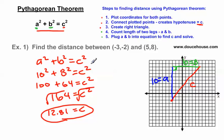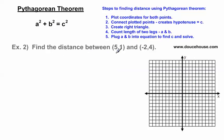If you saw my video on the distance formula, you'll notice some similarities, but this seems easier — there are no negative signs. Moving on to the next example: find the distance between (5, 1) and (-2, 4). I'm going to plot (5, 1) — over 5, up 1 — and then (-2, 4) — back 2, up 4. Now I'll connect the plotted points and call that side C. I'm going to go down and over to create the right triangle. These two legs create a right angle, making this a right triangle.